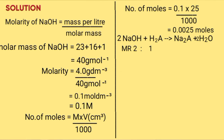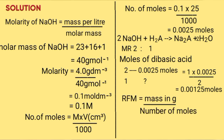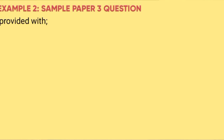From the mole ratio of 2 to 1, the moles of dibasic acid is calculated as: 2 contains 0.0025 moles, so for 1 we cross-multiply: 0.0025 times 1 over 2 equals 0.00125 moles. Hence, the relative formula mass of the acid is 0.15 divided by 0.00125, which equals 120.